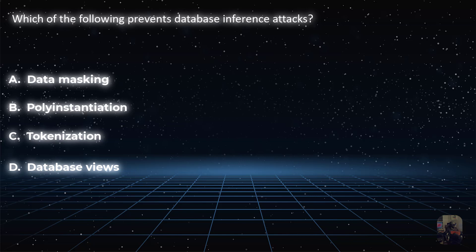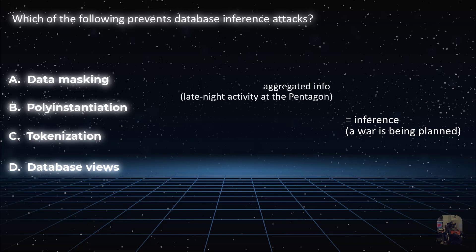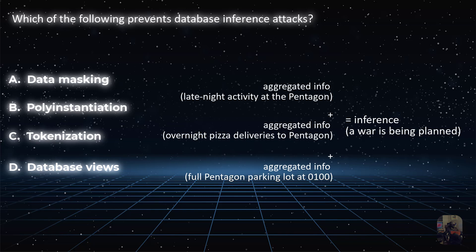First we must define the term inference. It means the ability to derive some type of information without directly reading about it. Instead, other bits of lower-level information are aggregated together to guess the higher-level information. Aggregating means coming together — putting things together from smaller bits and little pieces. We don't want everybody taking little bits of information from various sources and coming to the conclusion of something bigger. We don't want that when it comes to database security.